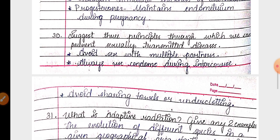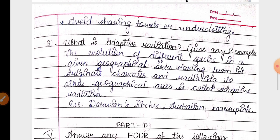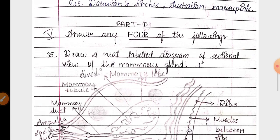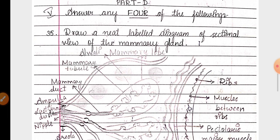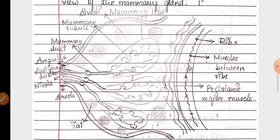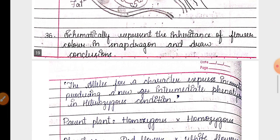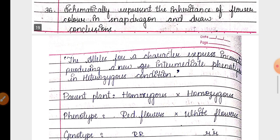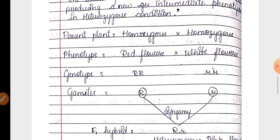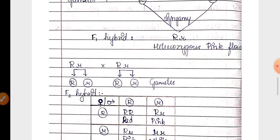Then 30th question about sexually transmitted diseases. Then 35th question about adaptive radiation and examples. Then for five marks, 35th question is a labeled diagram of mammary gland. Then 36th question about incomplete dominance in snapdragon based on the flower color.